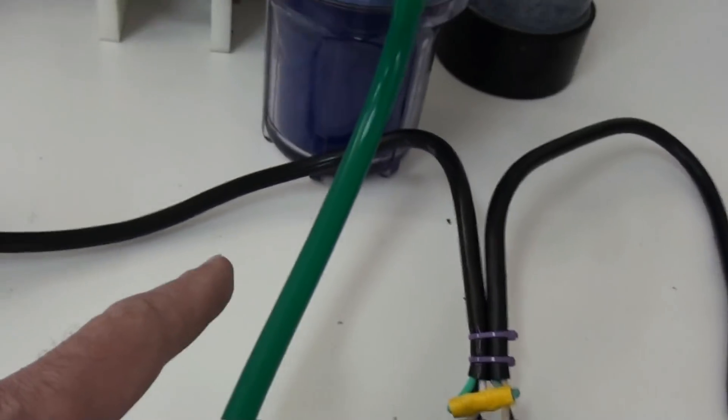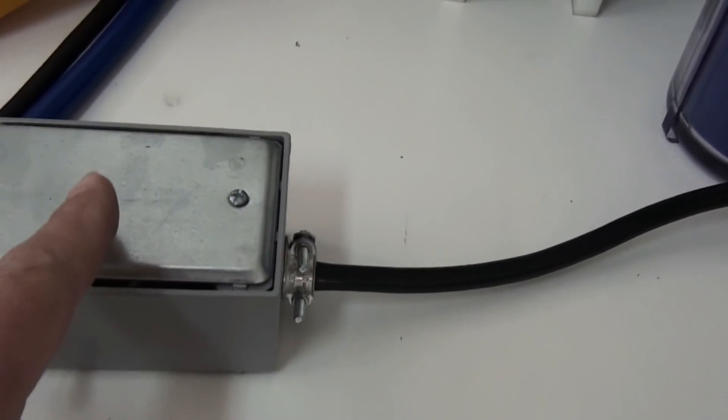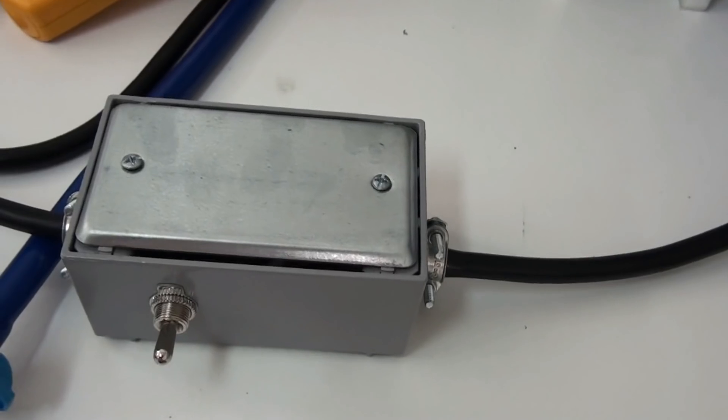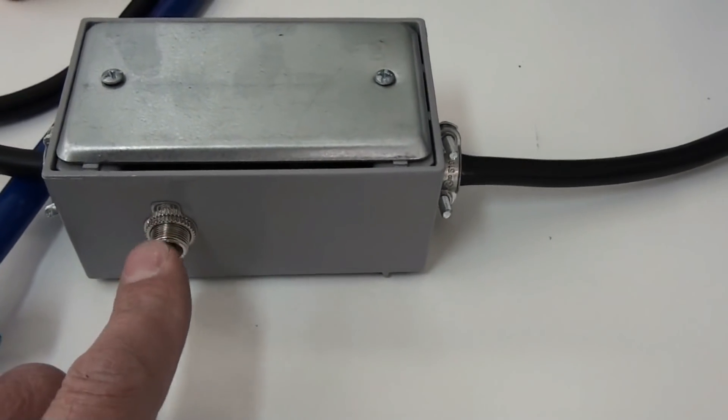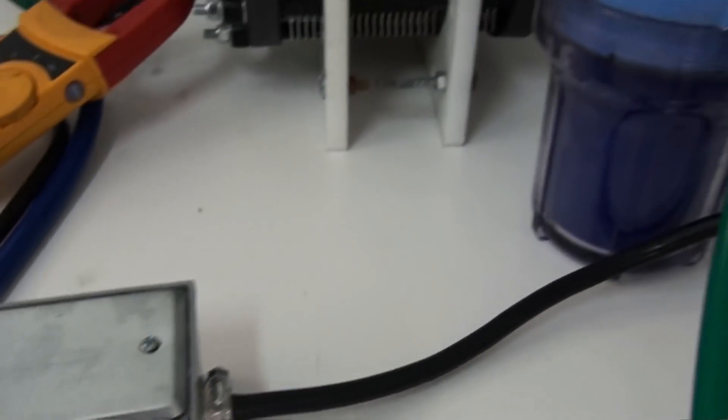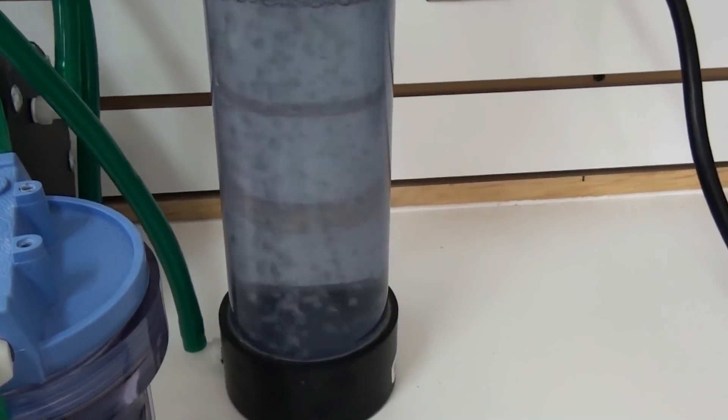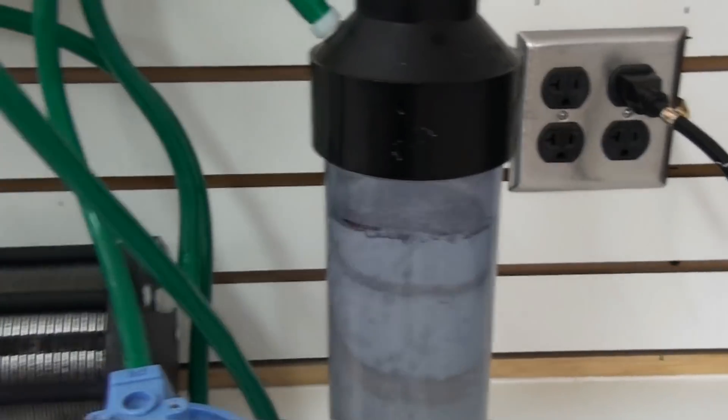From here, the AC power comes into this box. This is where it converts AC to DC power. And here's your on-off switch for the system. Turning that off will shut off the gas production.